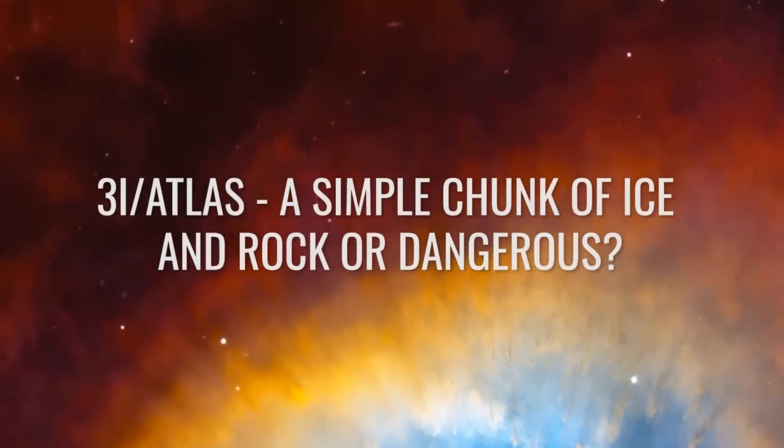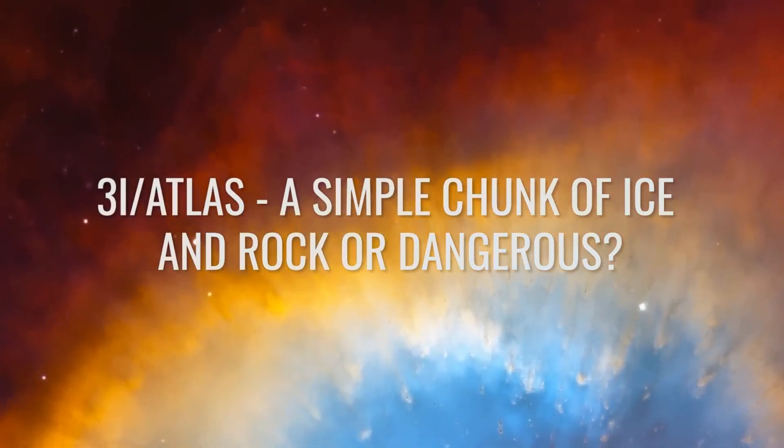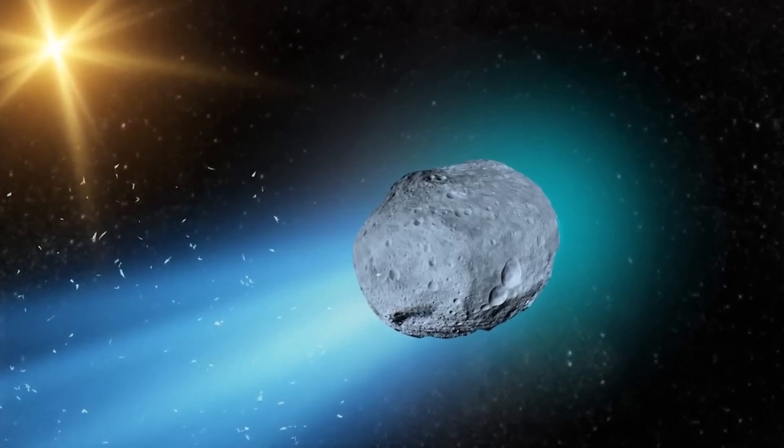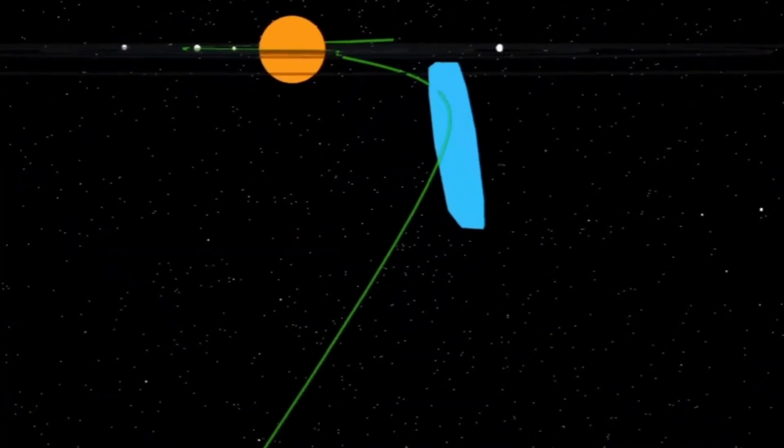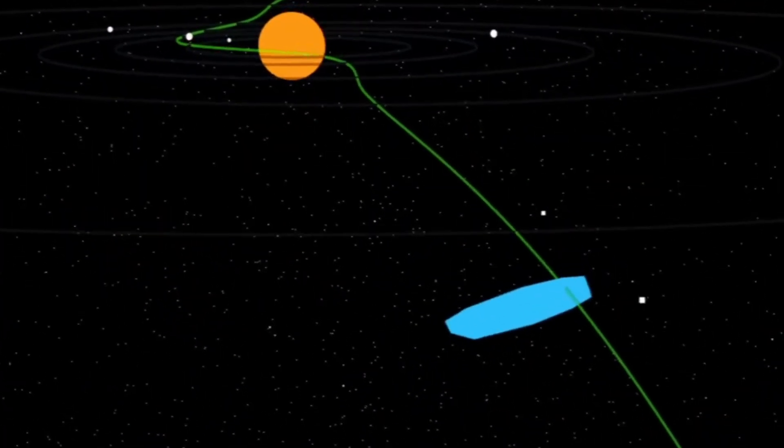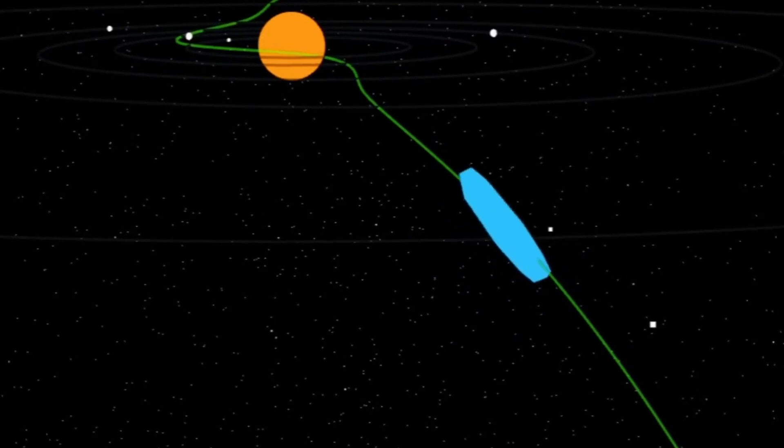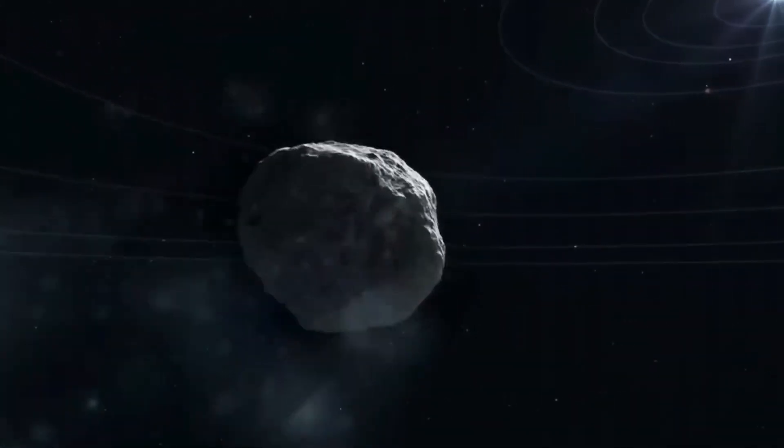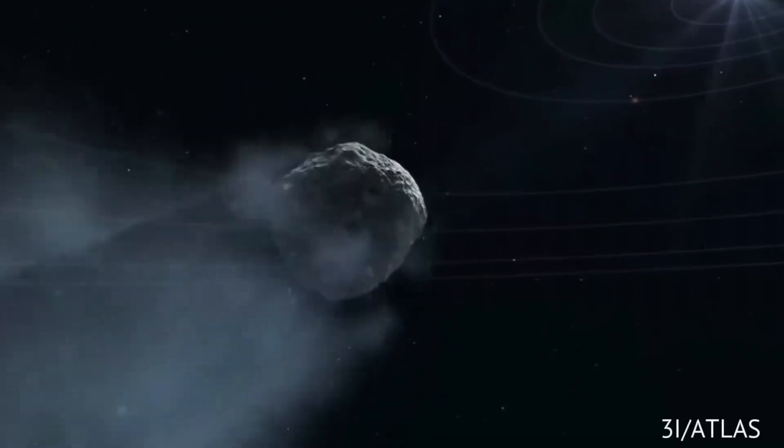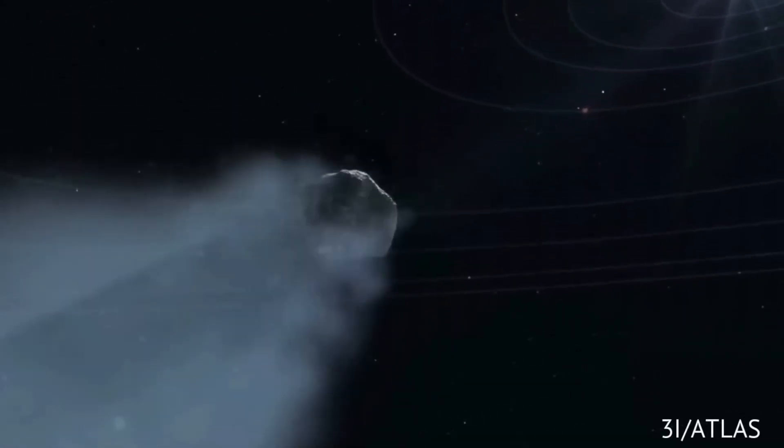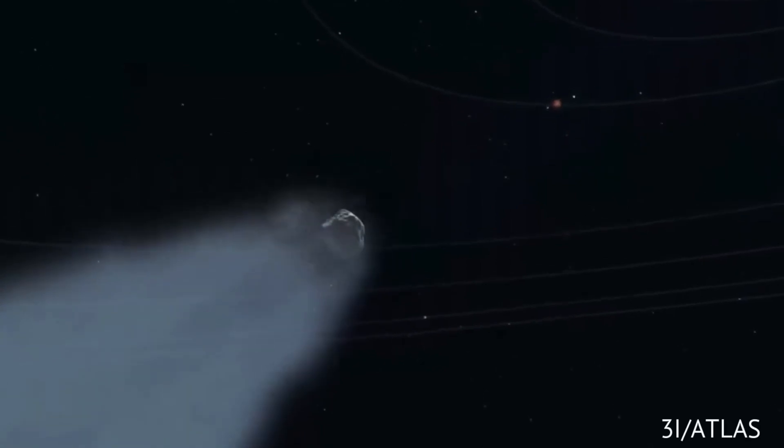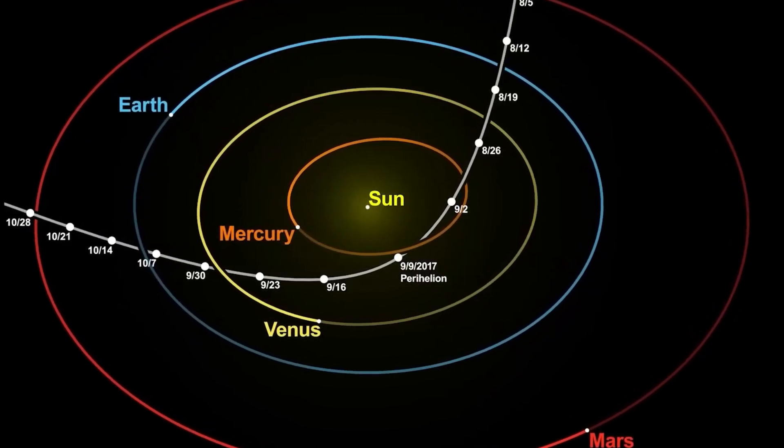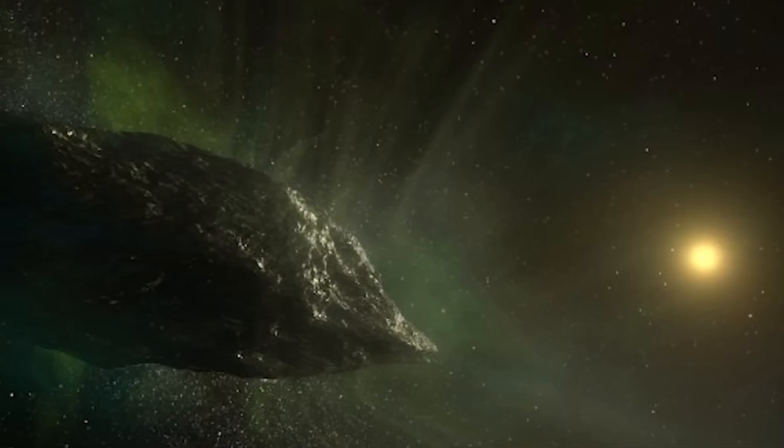The object is currently located about 3.8 astronomical units from the sun, that is almost 570 million kilometers or 3.8 times the distance between Earth and the sun. The object is approaching on a hyperbolic, non-closed orbit, which means that 3E Atlas will cross our system once and then disappear forever. On October 3rd, 2025, the object will approach a planet for the first time: Mars. It will not pass directly by the red planet, but on astronomers' maps, this moment marks the point at which the object will definitely be inside the inner solar system.